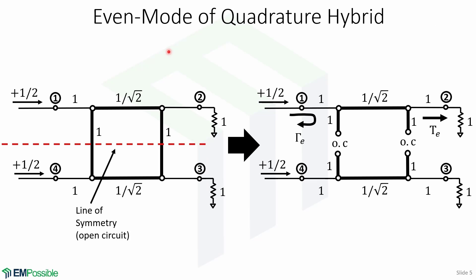For even mode, we assume a wave of amplitude 1/2 incident at port 1 and a wave of amplitude 1/2 incident at port 4. By superposition, the two excitations provide the original excitation. Because of the symmetry of the circuit with the even mode excitation, the voltage at port 1 is equal to the voltage at port 4. We can then bisect this circuit along the axis of symmetry and replace the bisections with open circuits. At port 1, we have an incident wave of amplitude 1/2, a reflected wave of amplitude gamma-e for even mode, and a transmitted wave of amplitude TE.